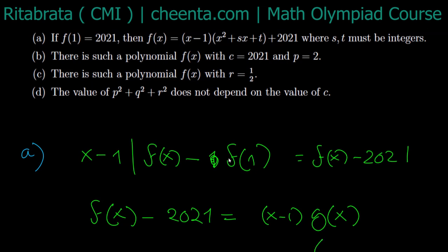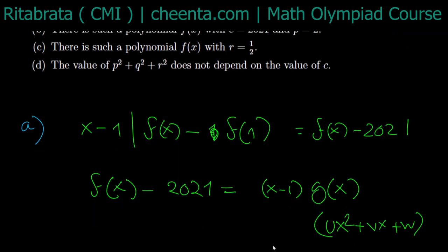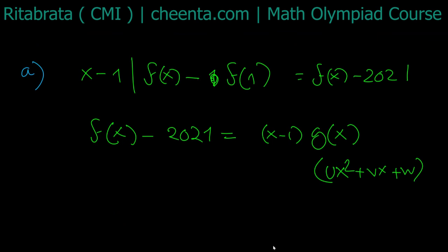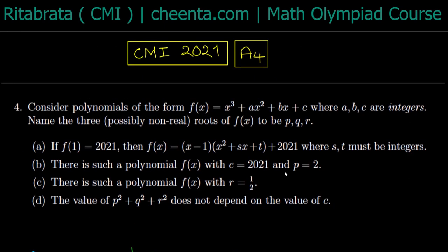So g should be of the form ux² + vx + w. In that case, the leading coefficient becomes u times x³, and as f is monic, u must be 1. So f(x) = (x - 1)(x² + sx + t) + 2021. You can easily check by multiplying and matching coefficients that s and t must be integers. So part (a) is true.